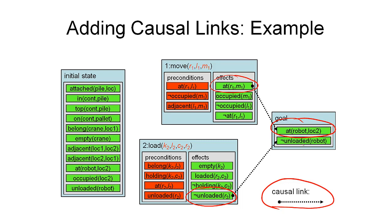This looks like the addition of actions and causal links should always go hand in hand. But there is a good reason for considering the addition of causal links as an independent plan refinement operation. Here is an example of a causal link that was not introduced together with an action: we use a condition from the initial state to support a precondition of an action that we've just introduced. Of course, we could also have causal links going directly from the initial state to the goal. But in this example, only one of the goal conditions was true in the initial state.